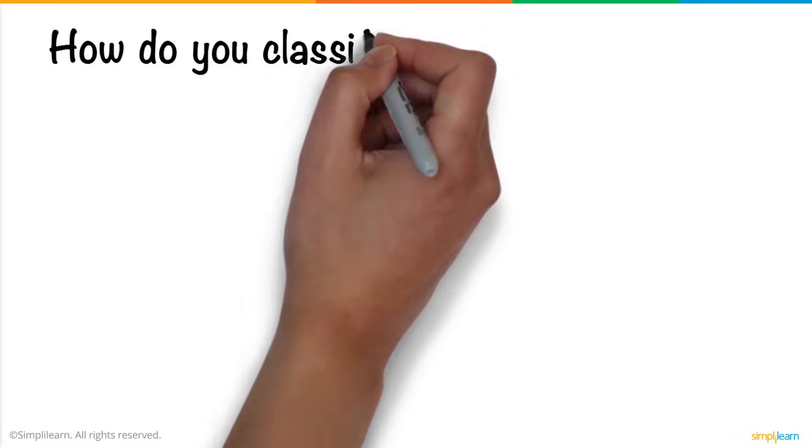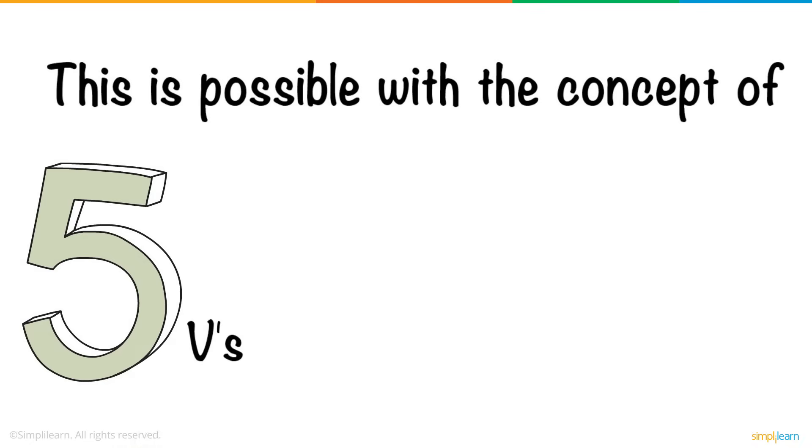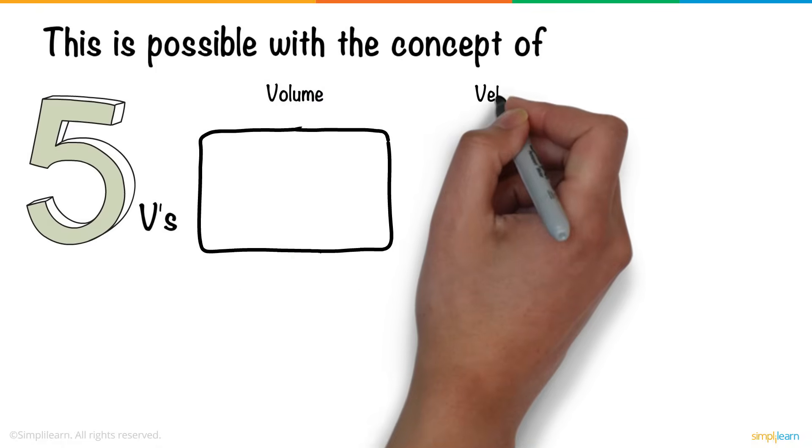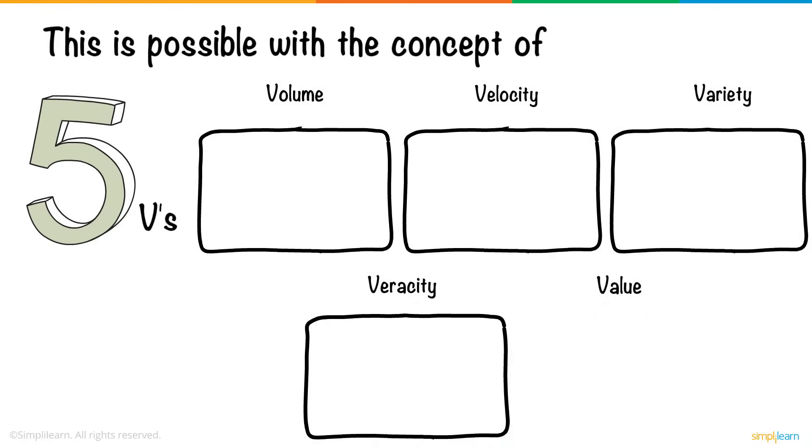So, how do you classify any data as big data? This is possible with the concept of 5 Vs: Volume, Velocity, Variety, Veracity, and Value.